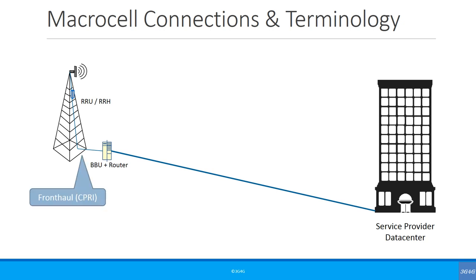You have the fronthaul using CPRI and then the backhaul. If you want to transmit on multiple sides of the tower, you add another RRU and another antenna, connect them up, and that sector can start transmission as well. This is typically how tower connectivity works.